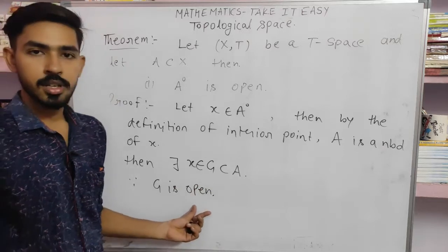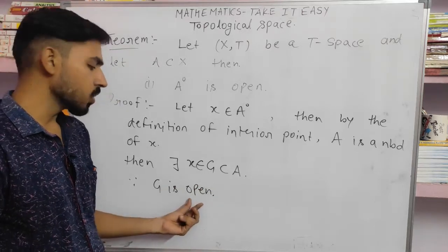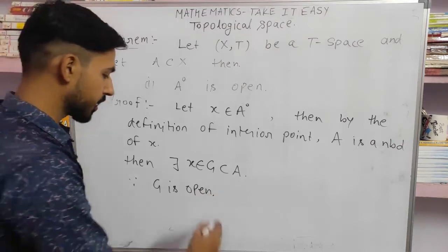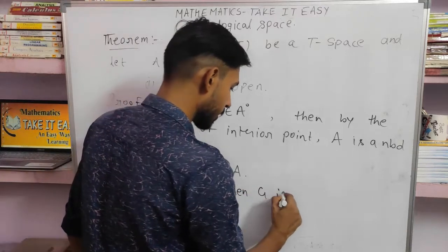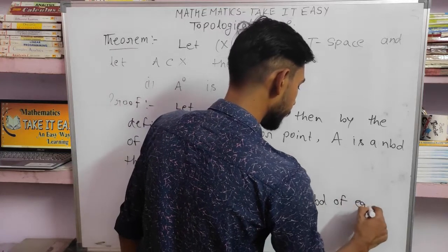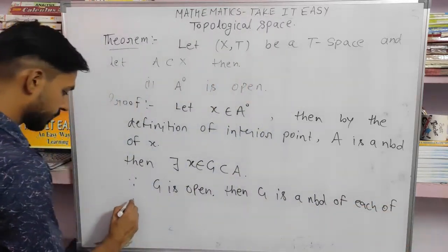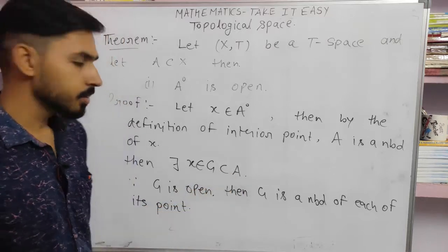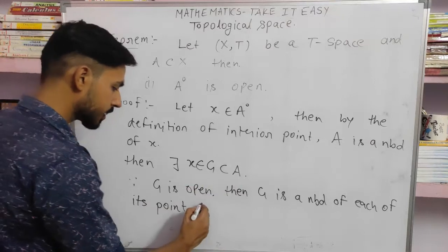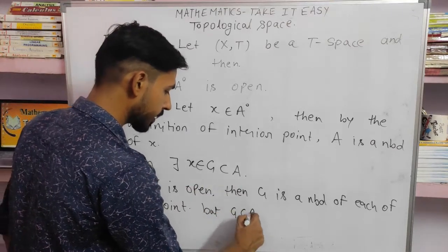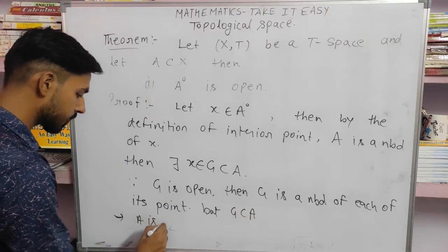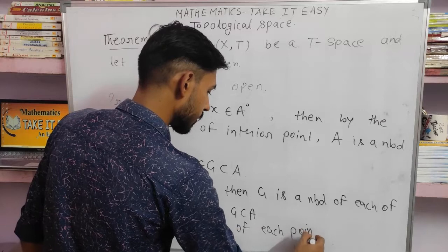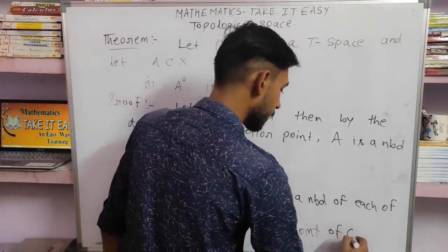G is an open set. Then by the definition — we have learned the theorem that every open set is a neighborhood of each of its points. It means G, being an open set, is a neighborhood of each of its points. And since G is a subset of A, A is also a neighborhood of each point of G.